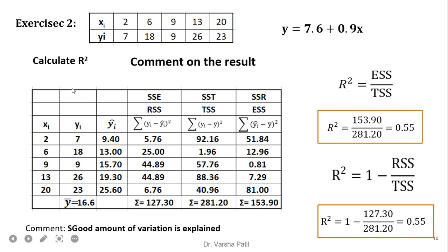The regression equation is Y equals 7.6 plus 0.9X. To calculate R-square, we can easily make the table in which from X and Y we can calculate Y-cap — the predicted value — from the line equation. And it is very easy to calculate RSS, TSS, and ESS.